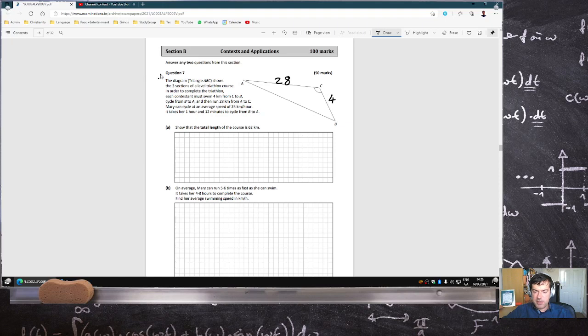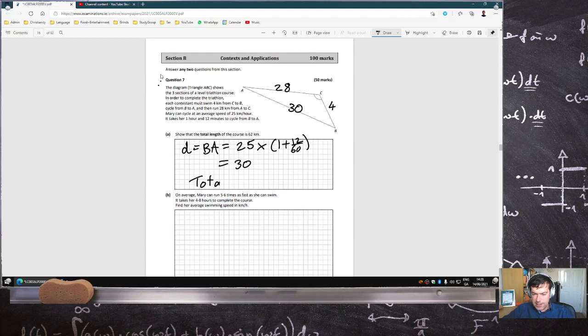Mary can cycle at a speed of 25, and it takes her an hour 12 to cycle from B to A. So the distance from B to A will be the speed multiplied by the time, which is 1 hour and 12 minutes, which is 30. So the total is 34 plus 28, 62 km.